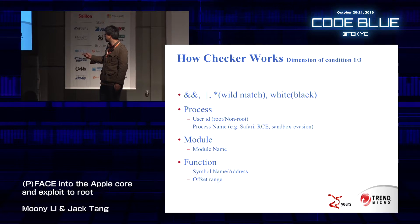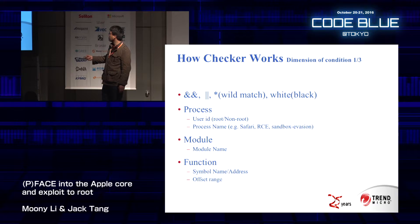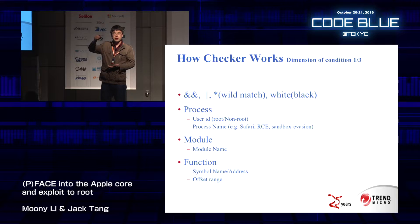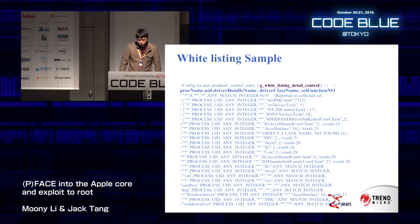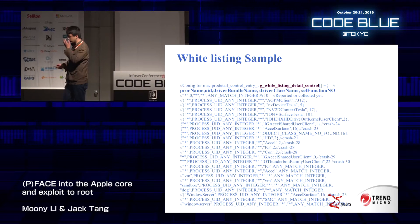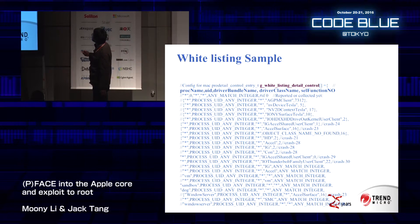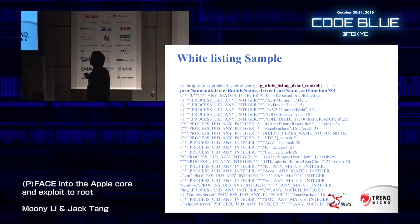We also care about module name and function names. Symbol name means function name and function address. This part is about the offset of the target function from beginning to end. In the whitelist detail control, we care about proc name, user ID, driver name, driver bundle name, driver class name, the selector of the function, and so forth.